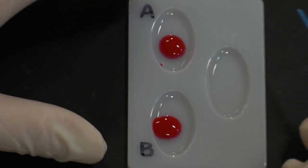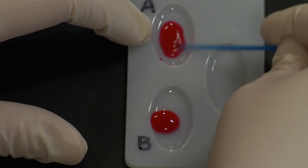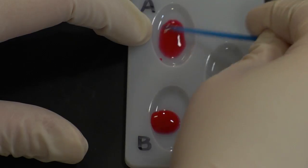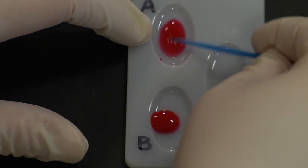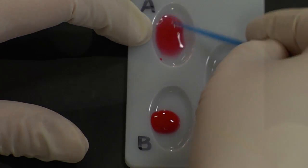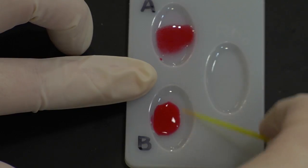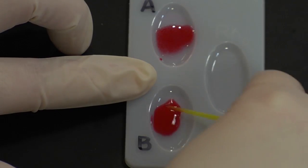Next I will stir the sample in well A with the blue toothpick, and I'll stir it for about 30 seconds. And I'll do the same in well B with the yellow toothpick, again for about 30 seconds, making sure not to slosh any out or make a mess.